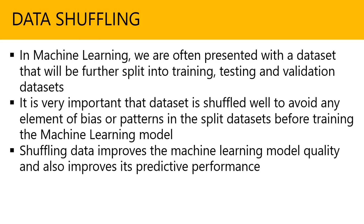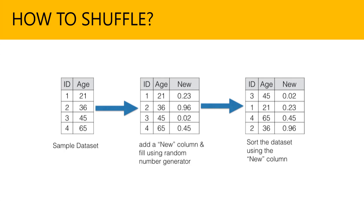Shuffling data simply improves the machine learning model quality and also improves the predictive performance. These are part of data collection, integration, and data management, because 80% of the time in machine learning you would be preparing your data. Now let me give you a very simple example of how to shuffle, so you have an idea.